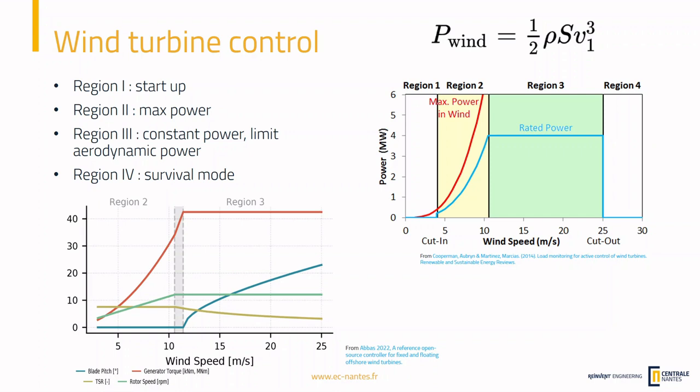Before we start talking about ServoDyn, let me give a quick reminder about wind turbine control. Why do we need to apply control to the wind turbine? If you look at the incoming power to the turbine, its formula is: half of the air density times the rotor surface area times the incoming wind velocity to the power of 3.